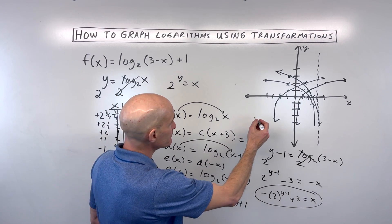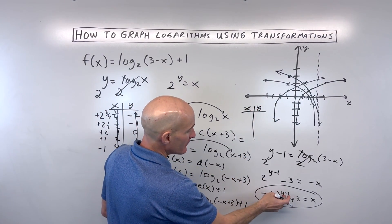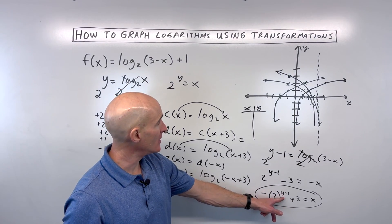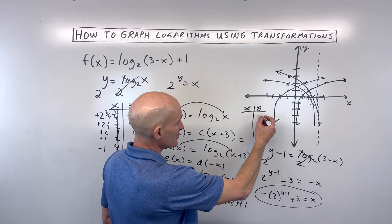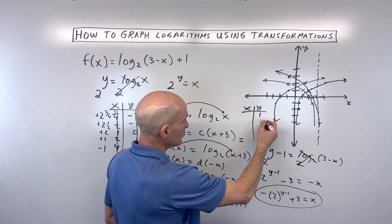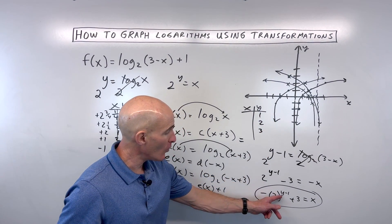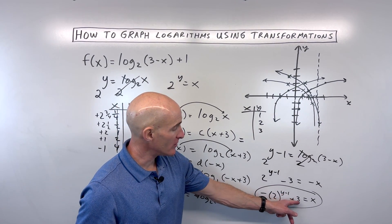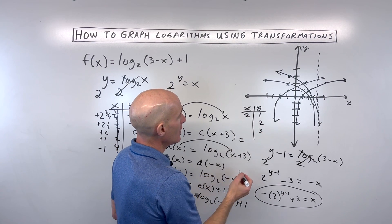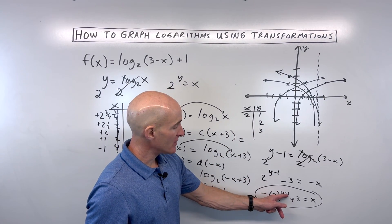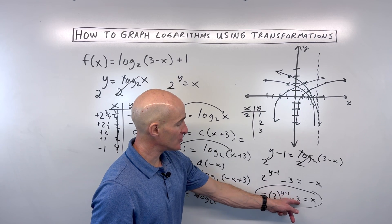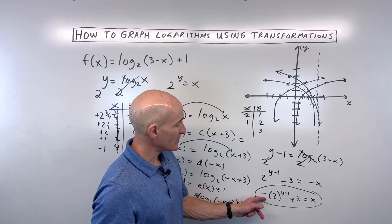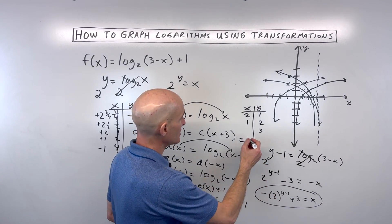I would make an xy table. I would plug in values for y and solve for x. It's going to be a little bit easier here because y is in the exponent position. So I might pick numbers that are easy to work with, like 1, 2, 3. y minus 1 is 0. 2 to the 0 is 1 times a negative is negative 1 plus 3 is 2. Let's say we put 2 in. 2 minus 1 is 1. 2 to the 1st is 2 times a negative is negative 2 plus 3 is 1. And 3 minus 1 is 2. 2 squared is 4 times a negative is negative 4 plus 3 is negative 1.